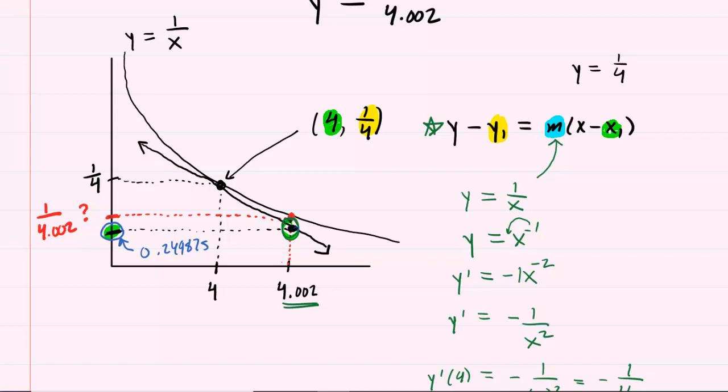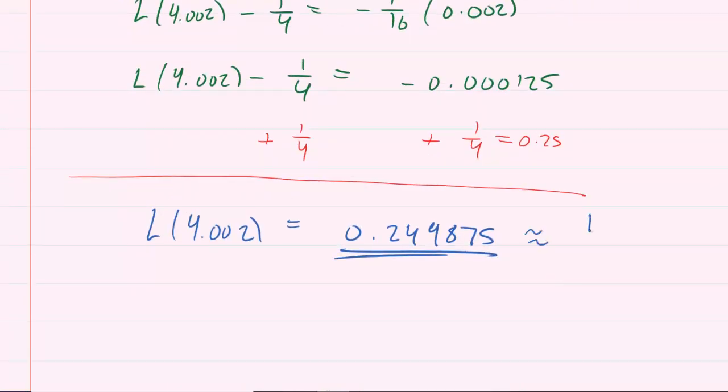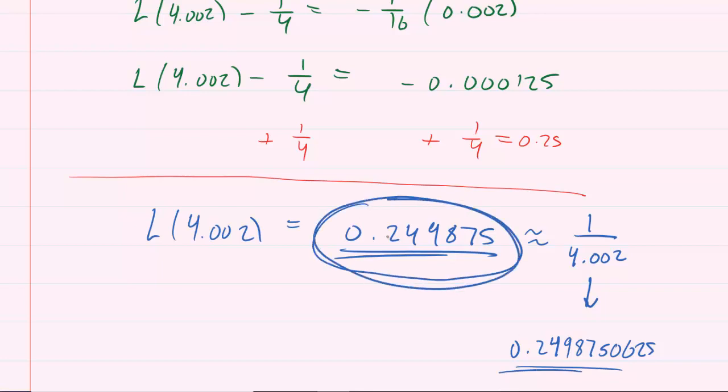Notice how close it is to the y-coordinate that we actually seek. Remember, we wanted 1 over 4.002. We will settle for this estimate because it's extremely close to the actual value, the actual y-coordinate. So this is the linear approximation to 1 over 4.002. By the way, 1 divided by 4.002 has an actual value of .2498750625, which, of course, is extremely close to our approximation. So this is the correct answer to the problem.